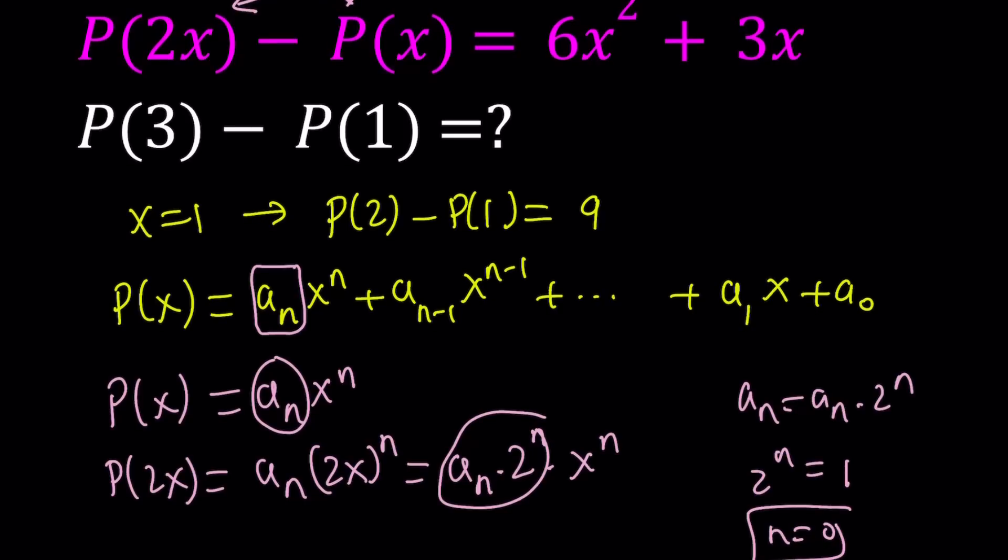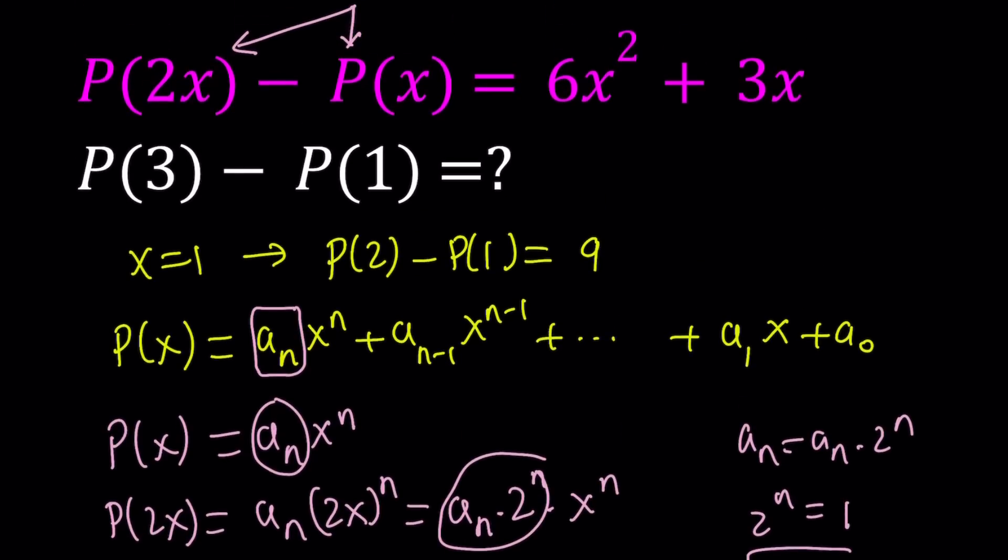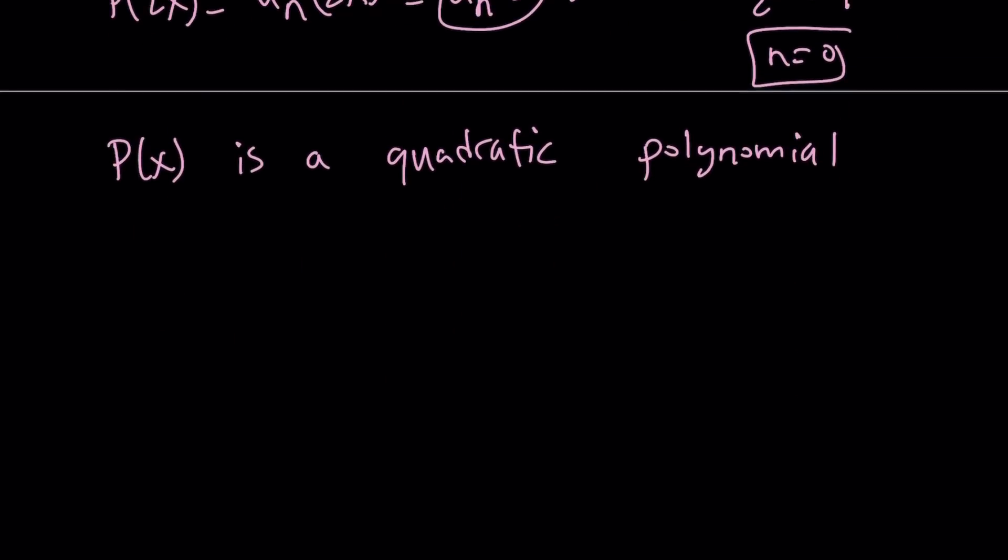So, that kind of explains if our polynomial is not constant, then P of 2x and P of x should have different leading coefficients. Which brings us to the idea of P of x to be a quadratic. So from here, we deduce that P of x is a quadratic polynomial. Now, wouldn't a cubic work? No, it wouldn't work. Because if you plug in a cubic for P of x, P of 2x and P of x, their difference is going to be cubic.